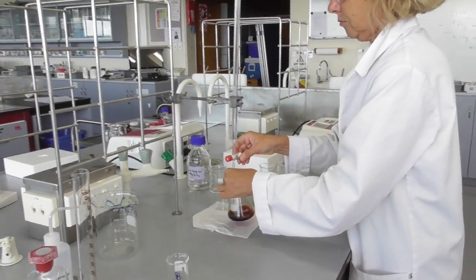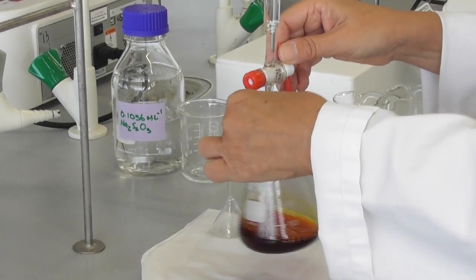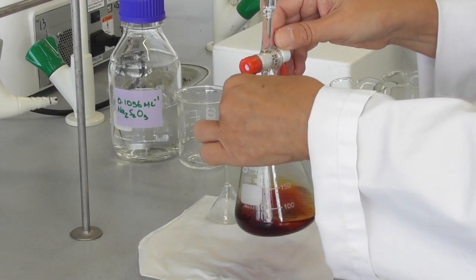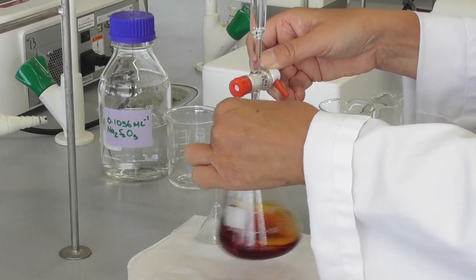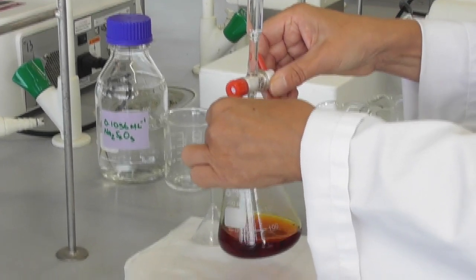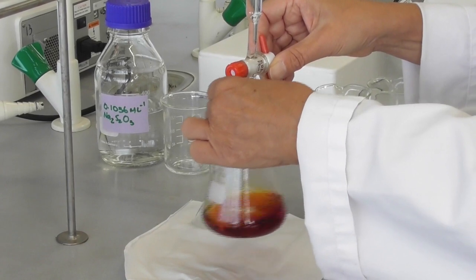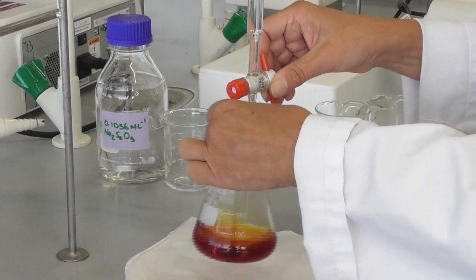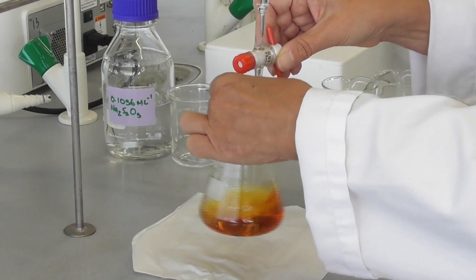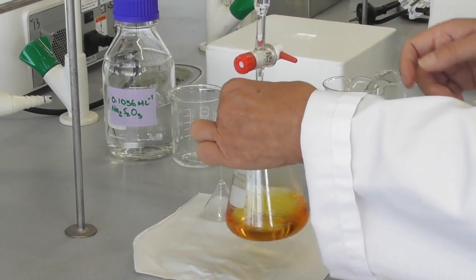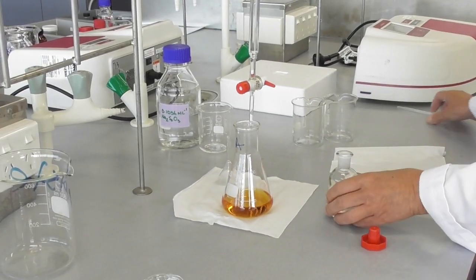I have now started my titration. I have removed the waste beaker from underneath the burette and am holding my flask that contains my peroxyborate and potassium iodide in the hydrochloric acid solution. I slowly add the thiosulfate solution while constantly swirling my flask to ensure that I have a good mixture at all times. The color will go from brown to orange to yellow, and when it turns about yellow I add my indicator.